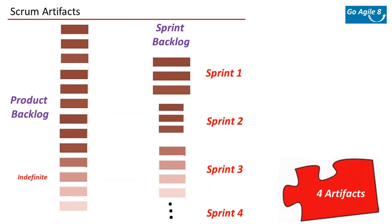The next artifact is sprint backlog. It's fairly easy to guess the difference from product backlog. The product backlog is the long list of open requirements. The stories you shortlist to be developed in the current sprint are what we call the sprint backlog. Basically, sprint backlog is the subset of product backlog items selected for the current sprint.